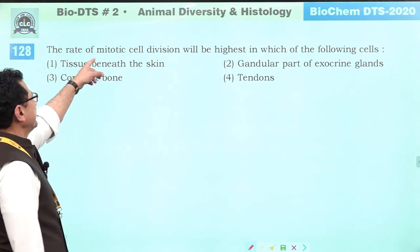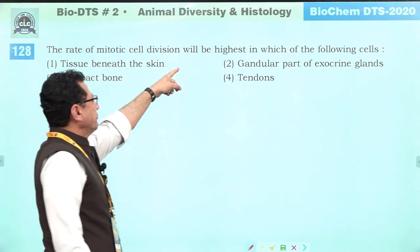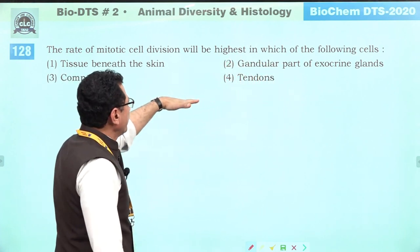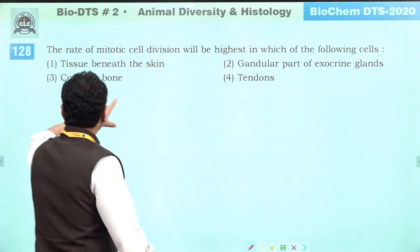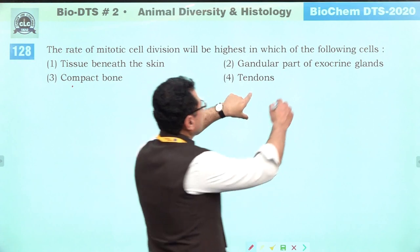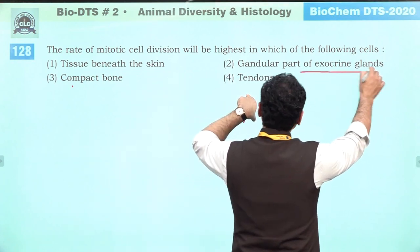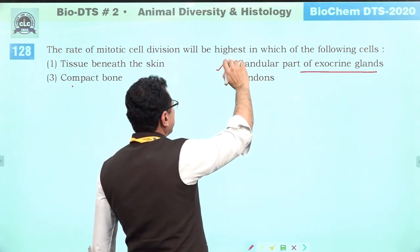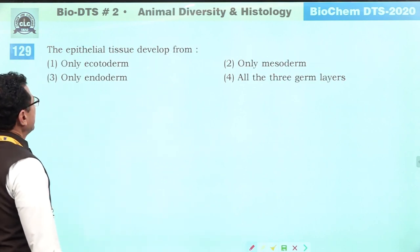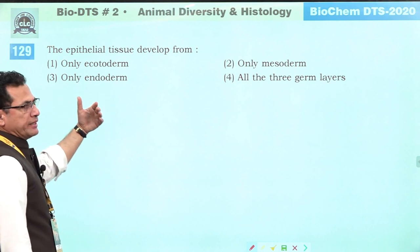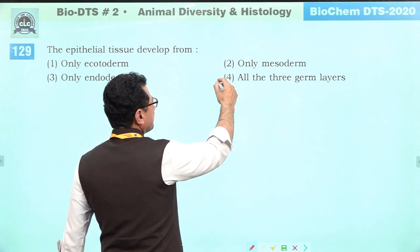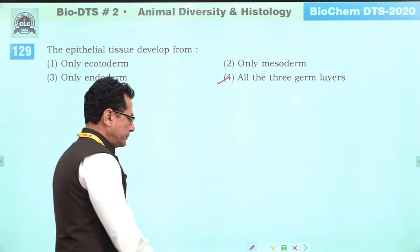The rate of mitotic division will be highest in epithelium-derived structures — specifically exocrine gland ducts. Tendons and compact bone are connective tissue with low mitotic rates. Epithelium tissue develops from all three germ layers: ectoderm, mesoderm, and endoderm.